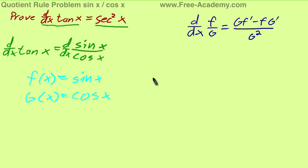As always, we need to know the two derivatives of these functions independently, so f prime of x equals cosine of x, and g prime of x equals negative sine of x.